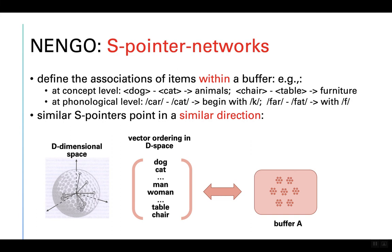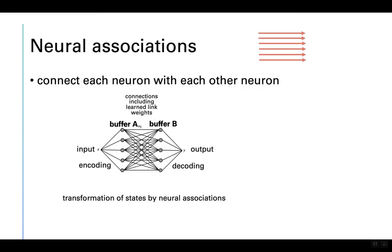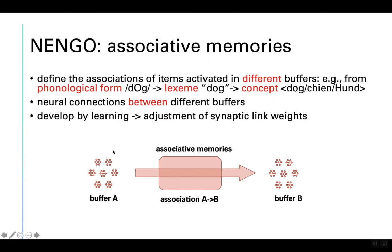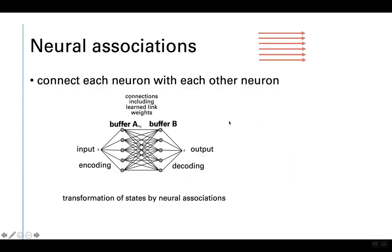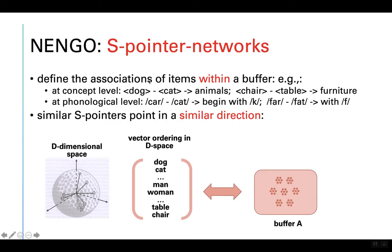The last point I would like to focus on in Nengo is S-pointer networks. What we defined before is how we can associate items or S-pointers between different levels — for example, between the phonological form level, the lexeme level, and the concept level. But something else is also happening: items may be associated within one buffer. For example, at the concept level, dog and cat are associated because both are animals, and chair and table are associated because both are furniture.